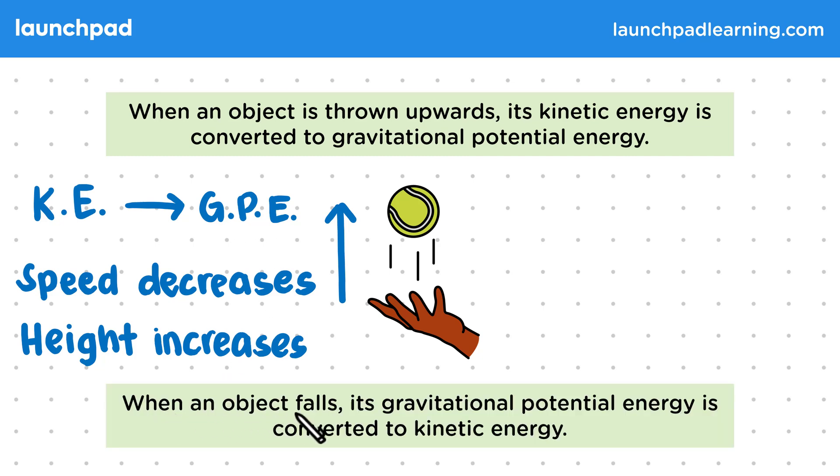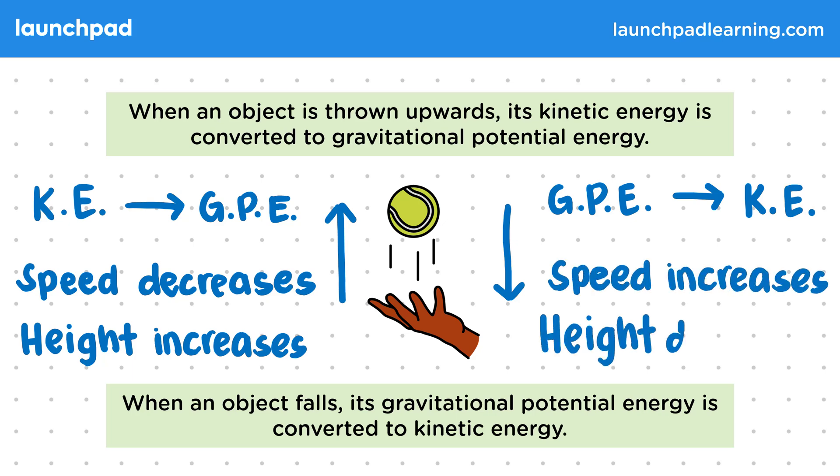When an object falls, its gravitational potential energy is converted to kinetic energy. So when the ball loses height again, work is done by gravity as the GPE is converted to KE. The ball gains speed and the height decreases.